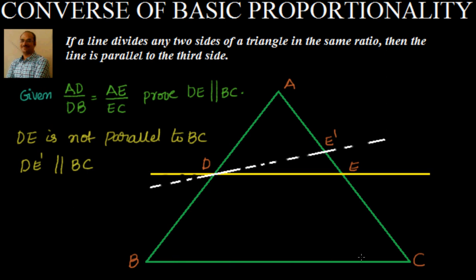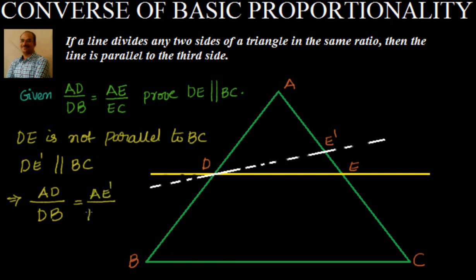If DE' is parallel to BC, then according to the basic proportionality theorem we know that AD divided by DB is equal to AE' by E'C. That is what the basic proportionality theorem states.